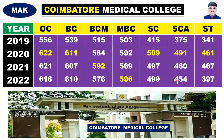Next is Coimbatore Medical College — CMC, Coimbatore. OC is 622, BC is 611, BCM is 592, MBC is 596, SC is 509, SCA is 491, ST is 461.